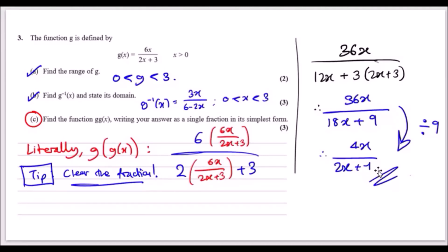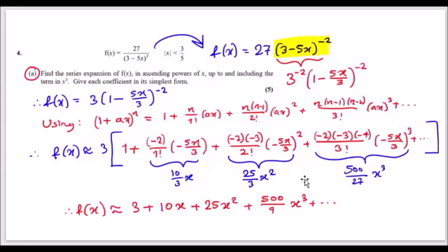Not bad so far. Now question four: f(x) = 27/(3 − 5x)². Find the series expansion of f(x) in ascending powers of x up to x³ using the binomial method.